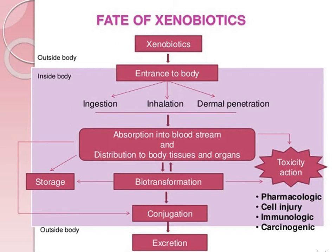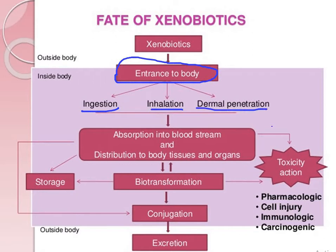We are discussing the fate of xenobiotics. In the last class we discussed what exactly a xenobiotic is, and the fate in both the environment and in human beings. When we talk a little more deeply related to human beings, xenobiotics enter the body in three different ways: ingestion, inhalation, and dermal penetration. They are then absorbed into the bloodstream and distributed all over the body — tissues and organs.